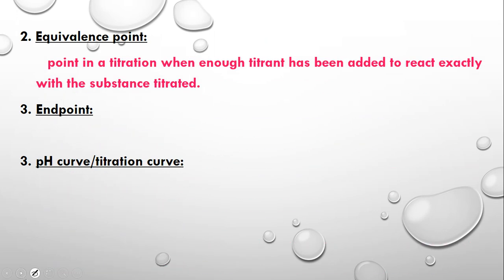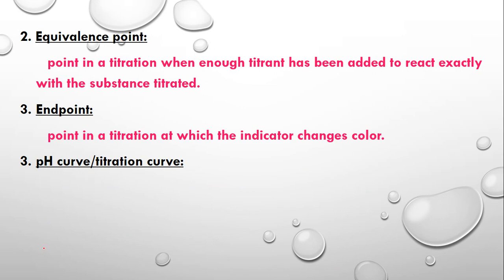The equivalence point is the point in the titration when just enough titrant has been added to react exactly with the substance being titrated. That's when the color change occurs. The end point in your titration is the point where the indicator changes color. At the equivalence point, the number of moles of the analyte equals the number of moles of the titrant — the mole-to-mole ratio is the same.